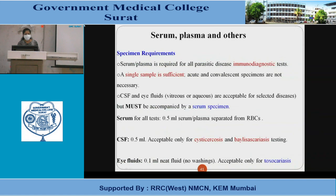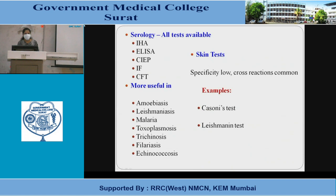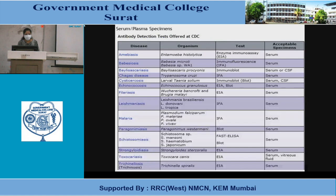Serum and plasma specimens: serum or plasma is required for all parasitic disease immunodiagnostic tests. A single sample is sufficient; acute and convalescent specimens are not required. CSF and eye fluids (vitreous and aqueous) are acceptable for selected diseases but must be accompanied by a serum specimen. Serum volume needed is 0.5 ml; CSF 0.5 ml acceptable only for cysticercosis; eye fluids 0.1 ml. Neat fluid is needed, not washing material, for toxocariasis. Available serological tests include ELISA, IHA, IFA, CFT, and skin test. Specificity is low and cross-reactions are common. More useful in amoebiasis, leishmaniasis, malaria, toxoplasmosis and trichinosis. The skin test includes the Casoni test and the leishmanin test.